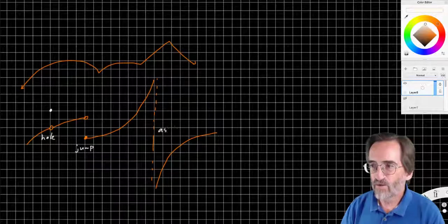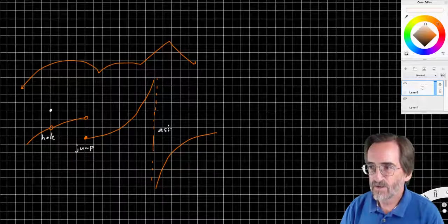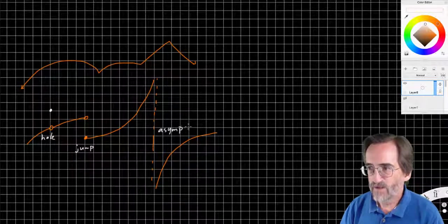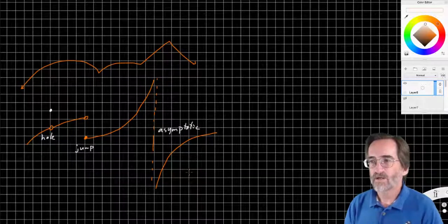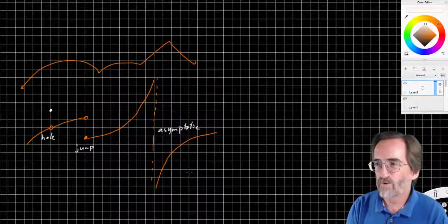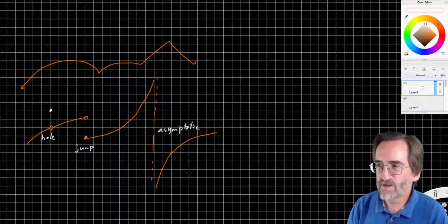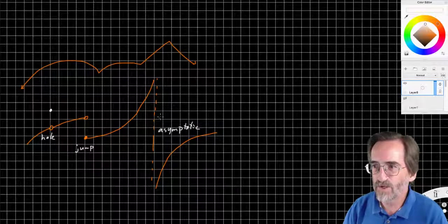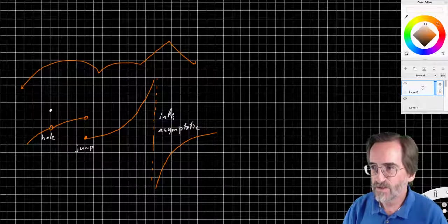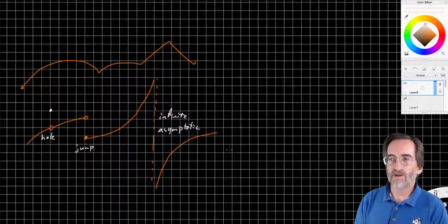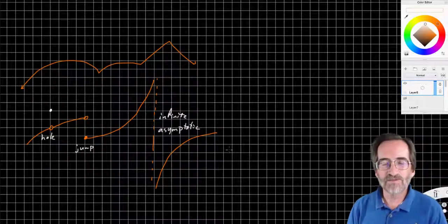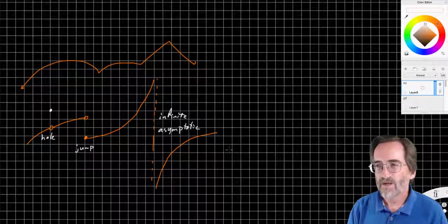Asymptotic, or asymptote discontinuities. We'll say asymptotic, which is the adjective form of the word. Asymptotic discontinuity, or also an infinite discontinuity. So those are the types of discontinuities that you're going to identify.